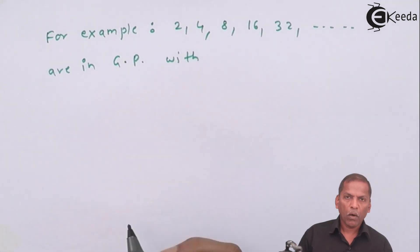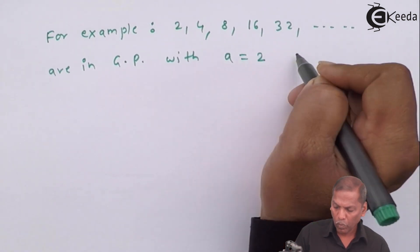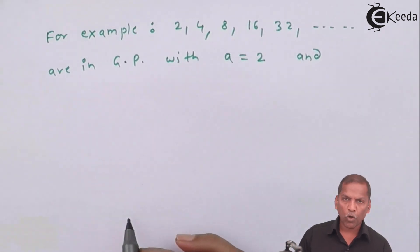With first term a equal to 2 and common ratio r equal to 4 upon 2 is equal to 2.